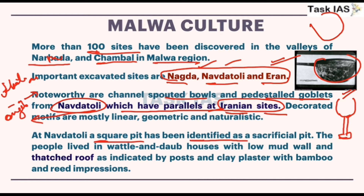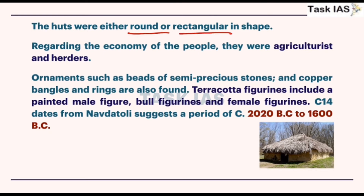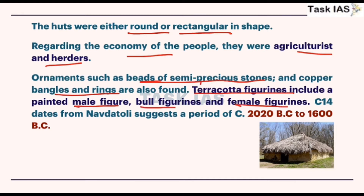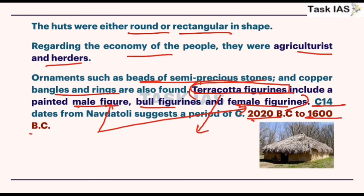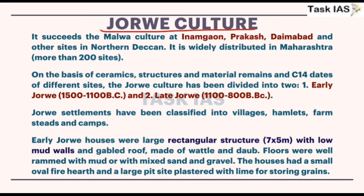People of Malwa culture lived in wattle-and-daub houses with low mud walls, thatched roofs as indicated by post holes, and clay plaster with bamboo and reed impressions. Houses were either round or rectangular. Economy was again based on agriculture and animal husbandry. Ornaments such as beads of semi-precious stones and copper rings were found, as well as terracotta figurines including male bull and female figurines, showing specialization in terracotta and equal focus on both male and female subjects. C-14 dating shows approximately 2000 to 1600 BC, making Malwa culture younger than Ahar and Kayatha cultures.